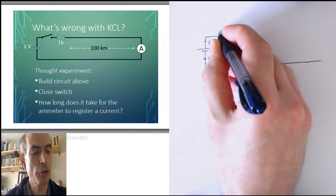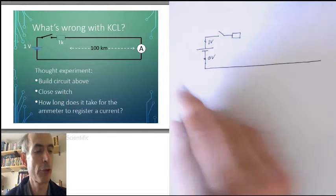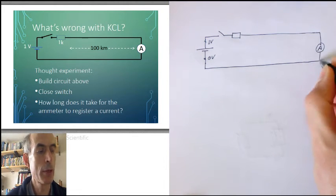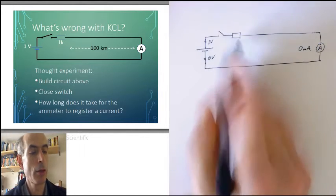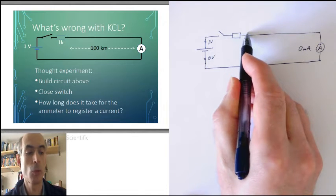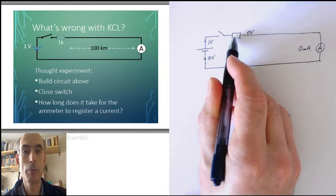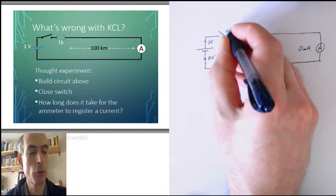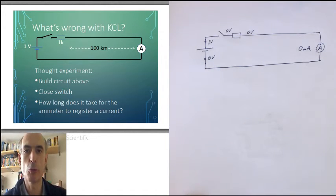The switch is open, therefore there is no current flowing in this circuit at all. So if there's no current, the ammeter will be reading 0. The voltage at this point here will be 0. And with no current, the voltage drop across the resistor will be 0. So this point here would be at 0 volts as well. That's our situation before the switch is closed.